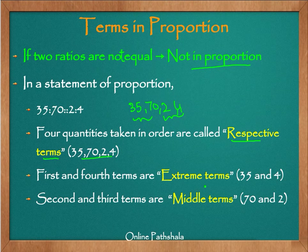The first and the fourth terms are called extreme terms — that is, 35 and 4 — because they are on the outside. The second and third terms, 70 and 2, are called the middle terms.